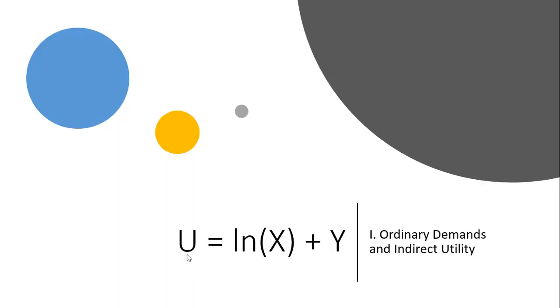Hello. In this video, we're going to take this quasi-linear utility function as a function of units of good x and good y, and solve for the ordinary demands or Marshallian demands, and then also get the indirect utility function.